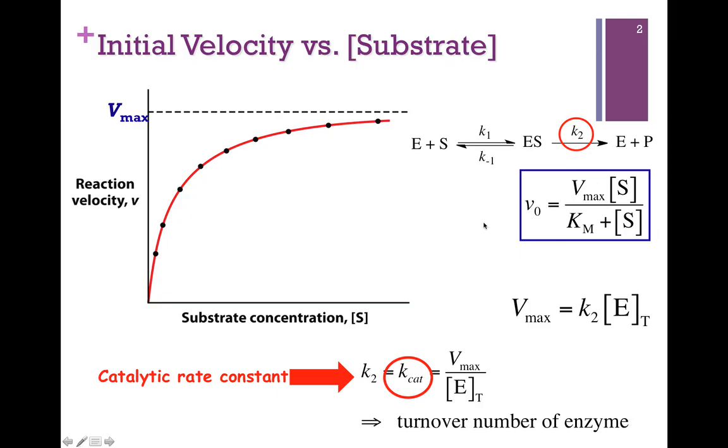Here's our Michaelis-Menten equation and our simple reaction scheme. If we plot initial velocity versus substrate concentration it reaches some saturating value that represents the maximum velocity. We can estimate Vmax simply from our curve. Recall our Vmax equals K2 times the total concentration of enzyme, so we can rearrange that equation a little bit.